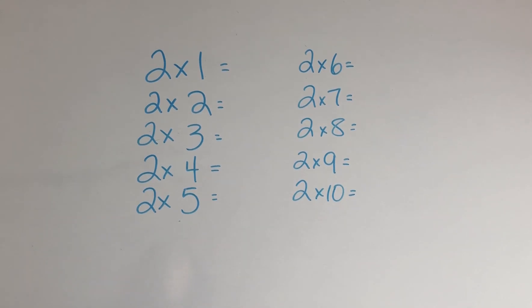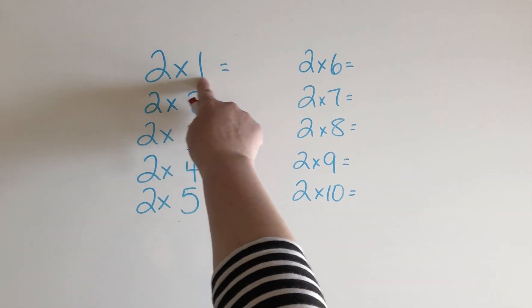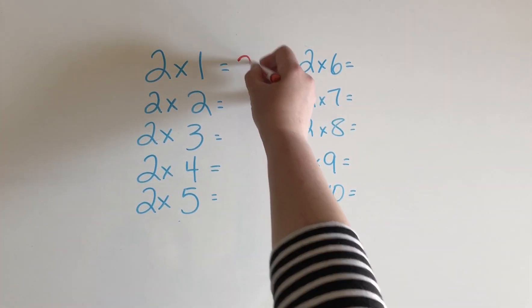When we multiply by 2, we can think about the addition doubles. So for 2 times 1, what is the double of 1? That's 2.